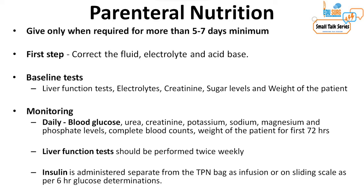Once parenteral nutrition is started, daily monitoring for the first 72 hours includes electrolytes — especially phosphate levels — complete blood count, urea, creatinine, and patient weight. Liver function tests should be performed twice weekly. Hyperglycemia is common when starting parenteral nutrition; insulin can be given separately as an infusion or on a sliding scale based on six-hour glucose monitoring. All these steps apply in the first week. Once parameters stabilize on a fixed nutrition rate, monitoring can be less intensive.